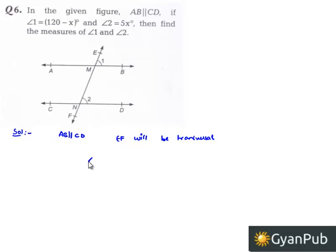We know that corresponding angles about the transversal are always equal. So we can equate here, angle 1 is equal to angle 2. But according to the problem, angle 1 is given as 120 minus x degrees, which is equal to angle 2 given as 5x.